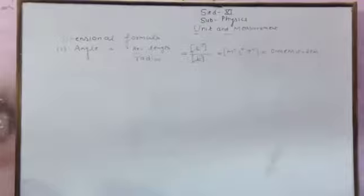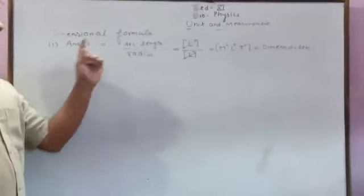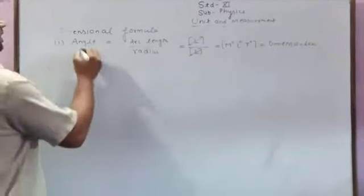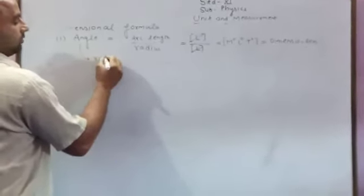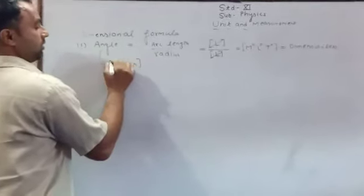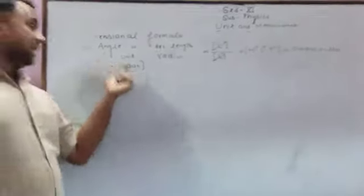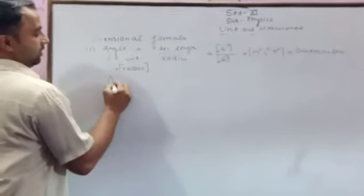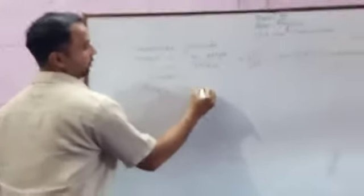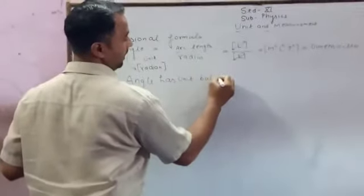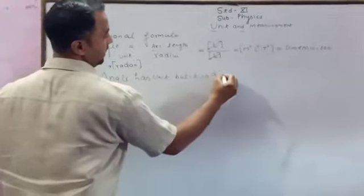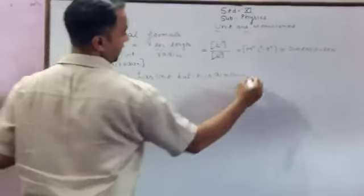Among all physical quantities, angle is a special case — its dimensional formula is dimensionless, but its unit is radian. This is an important point: angle has a unit (radian) but it is a dimensionless quantity. We have to remember this point.